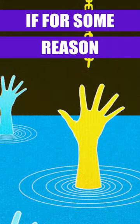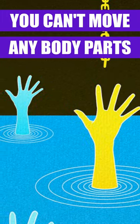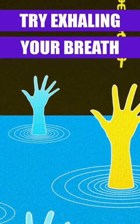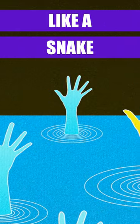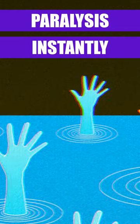If for some reason you can't move any body parts, try exhaling your breath making a hissing sound, like a snake. Sometimes this stops the paralysis instantly.